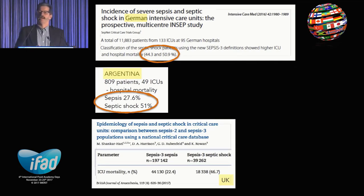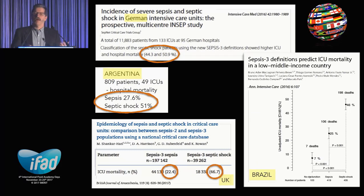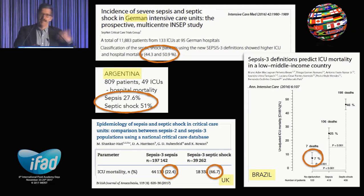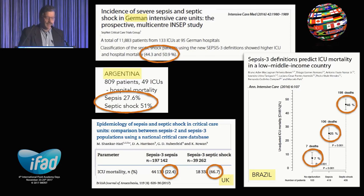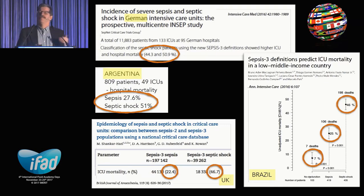In the UK, Sir Manu Shankar-Hari, who led the septic shock work for Sepsis 3, found ICU mortality in 200,000 patients of 22% for sepsis and 47% for septic shock. And from a hospital in Brazil: 7% if you didn't meet the two-point SOFA criteria, 25% if you did, and 46% for septic shock. Similar data from Japan and Korea are also emerging. We're talking the same language — there's remarkable consistency, whereas before there was a fourfold variation in mortality and a tenfold variation in incidence for septic shock.